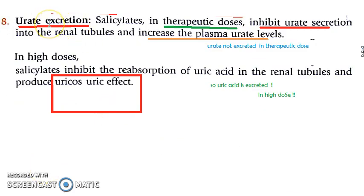Regarding urate excretion: in therapeutic doses, urate is not secreted into the renal tubules and plasma levels of urate increase. But if you give a high dose, it will inhibit the reabsorption of uric acid, so uric acid gets excreted. So at high dose, it has a uricosuric effect and could treat gout.